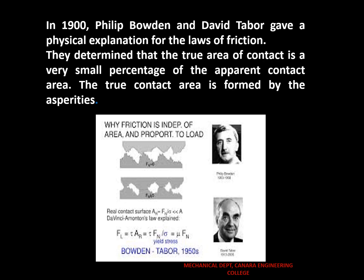Later, in 1900, Philip Bowden and David Tabor used a physical explanation for the law of friction. They determined that the true area of contact is a very small percentage of the apparent contact area.